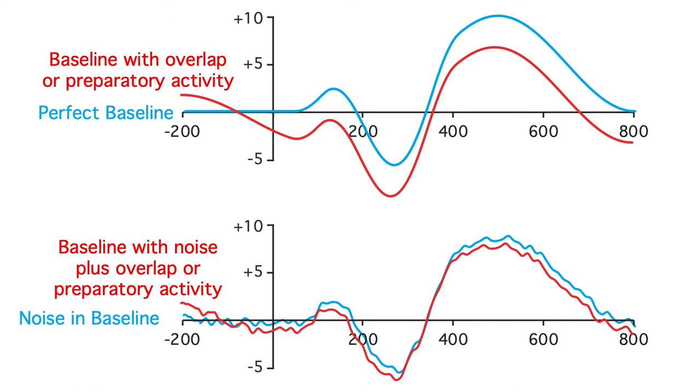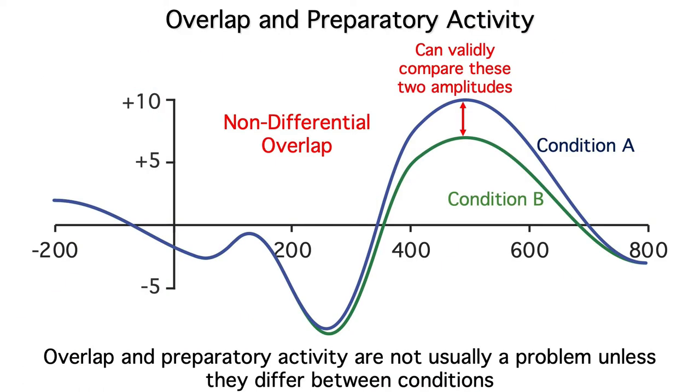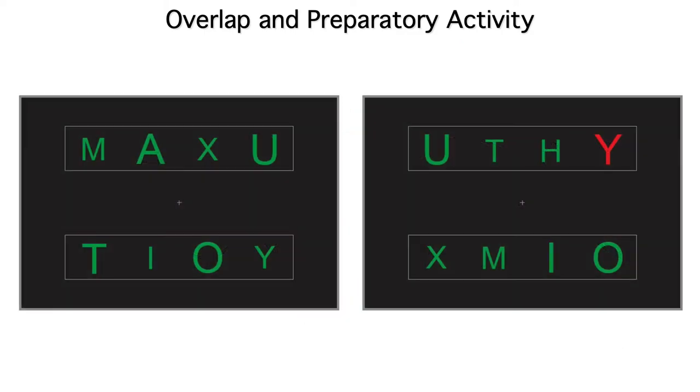As we discussed in a previous video, a tilt in the baseline is not always a problem. If two conditions have the same tilt, it's still valid to compare the difference between them. To make sure that the tilt is the same, it helps to use experimental designs where the stimuli for the different conditions are randomly intermixed, rather than being presented in separate blocks of trials.